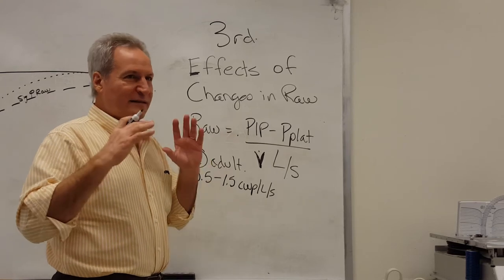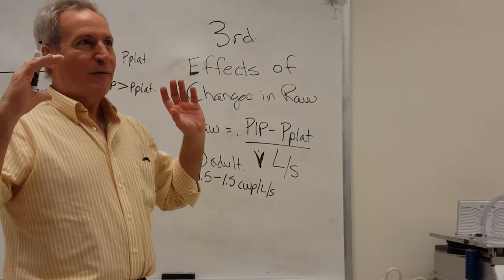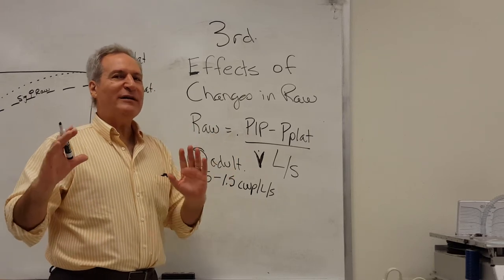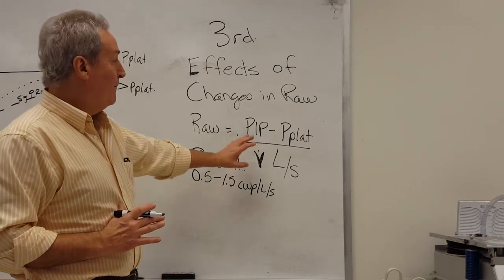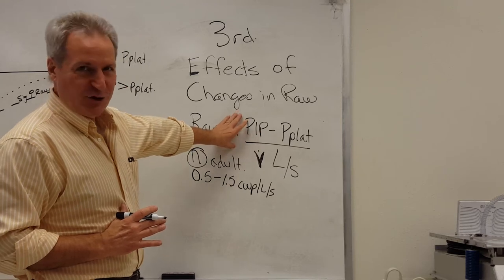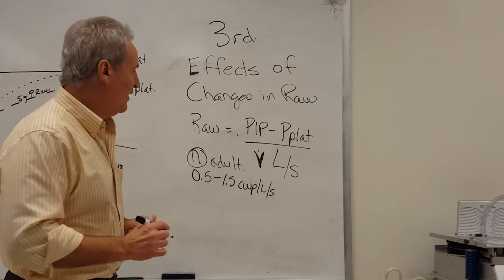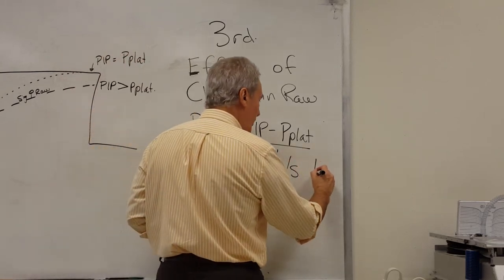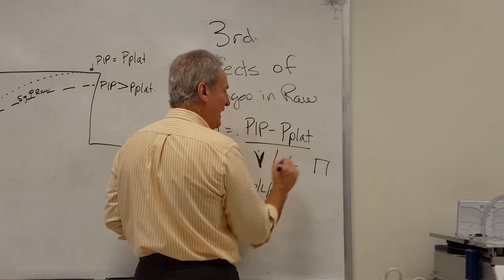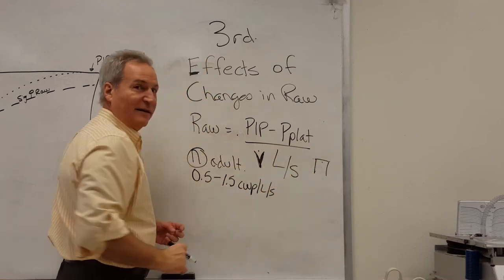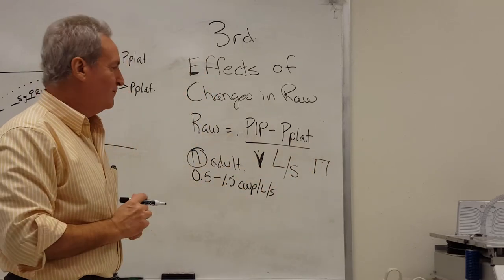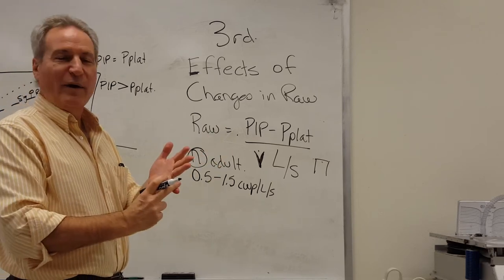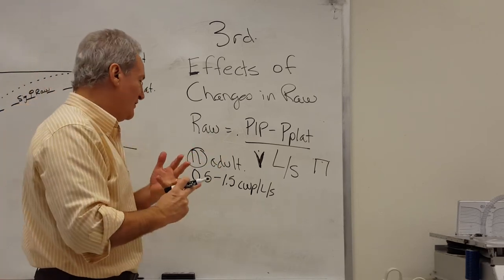When we look at changes in RAW, this is always going to be manifest in ways we're going to discuss, but we can only measure it when we're in volume ventilation with flow set in a square waveform, so that we know exactly from beginning to end what the flow is in liters per second. That's important. But the manifestations occur regardless of what flow waveform we use or what mode of ventilation we're in.